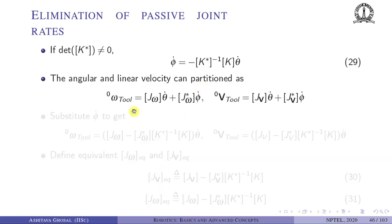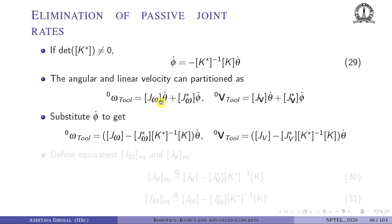Now we go back to the angular velocity expression. We partition omega_tool into two parts: J_omega times theta-dot plus J*_omega times phi-dot. This is always possible because the linear and angular velocity vectors are linearly related to both theta-dot and phi-dot. Similarly, the linear velocity of the chosen point on the platform is written as J_v times theta-dot plus J*_v times phi-dot.